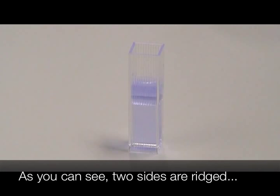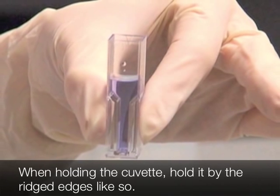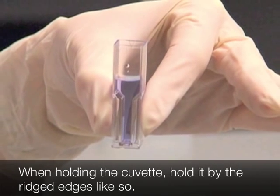As you can see, two sides of the cuvette are ridged and two sides are smooth. When holding the cuvette, hold it by the ridged edges like so.